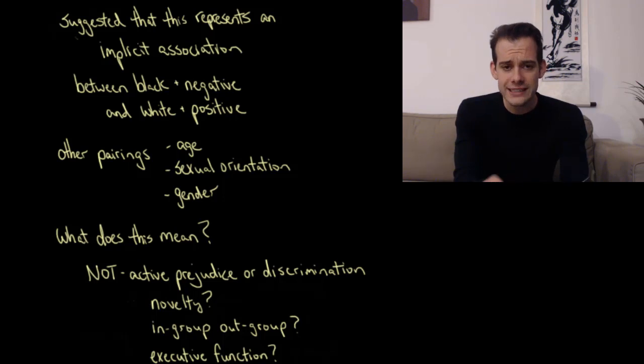But we might ask, what exactly does this mean? So let's say that you go to the website, you take this test, maybe you do it for a few different subjects here. They also have some for different political orientations, or maybe you do it for a sexual orientation. And let's say you find that you have some implicit association, some versions of this test that you're faster or slower at. What does this mean?